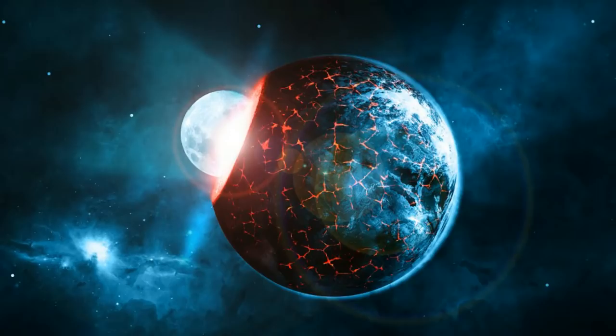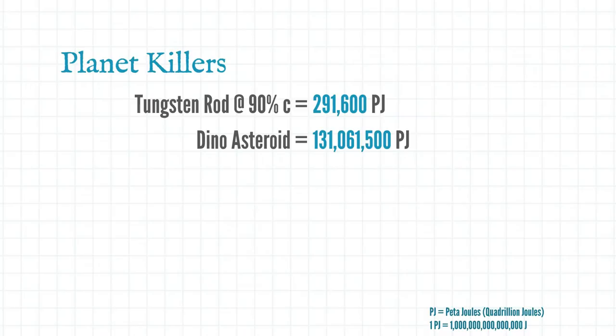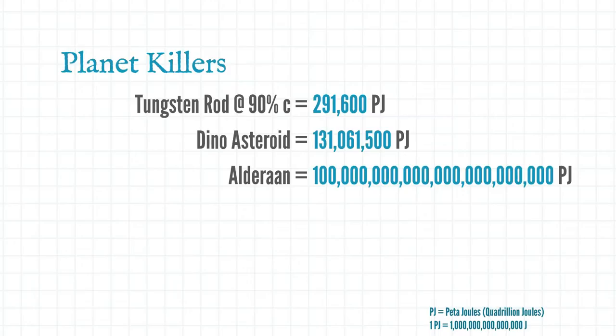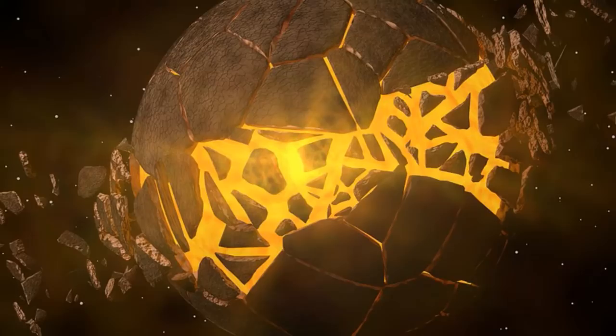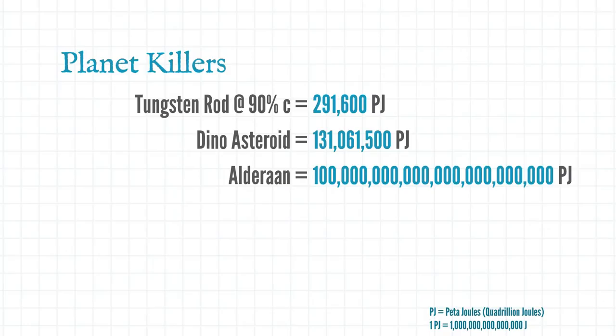Before we go it's worth considering a popular trope in science fiction of the planet killing weapon. It's estimated that the destruction of Alderaan in Star Wars would require 10 to the 38 joules of energy. That massive long number there is 100 undecillion joules. You've probably never even heard of an undecillion and why would you? It's just a crazy number. In order to make a relativistic kill missile that would destroy the earth in the same fashion we'd need a pretty big warhead and quite a lot of speed.